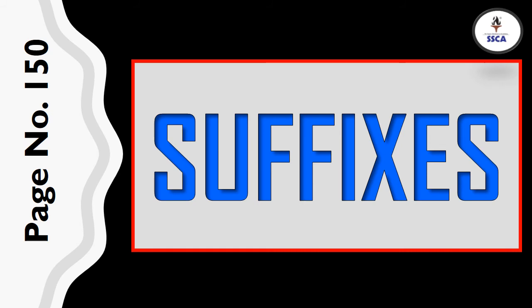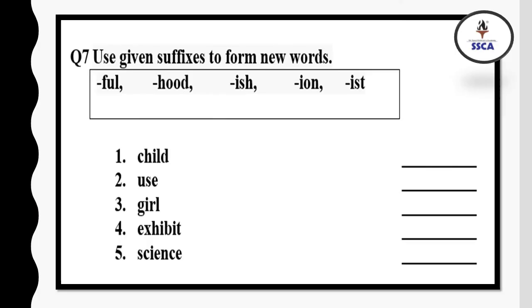Now, suffixes. It is also in the word formation topic, which is on page number 150. Open page number 150 and study about suffixes. After reading about suffixes, you will be able to solve question number 7 of your worksheet. In this question, five suffixes are given. Suffixes are those letter groups that are added to the end of a word to form a new word.